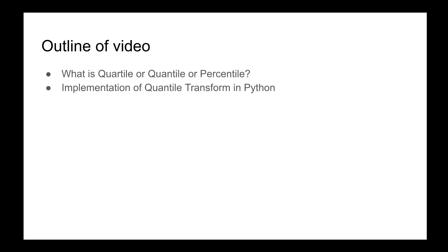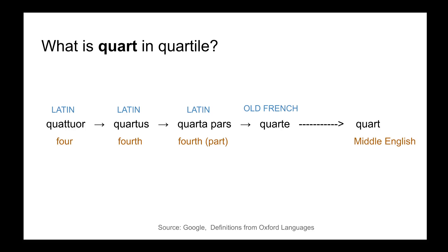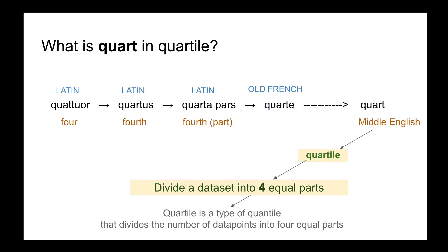The word 'quart' in quartile has an evolution as shown in this slide. The word 'quator' in Latin means four, and that is carried on in today's English as 'quart', which means four. That word in 'quartile' means dividing a dataset into four equal parts.